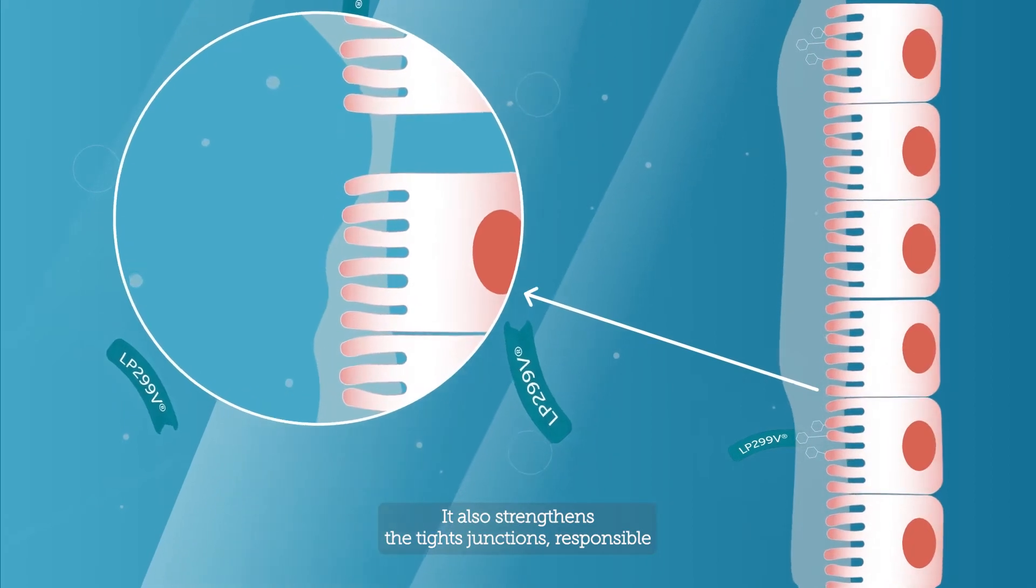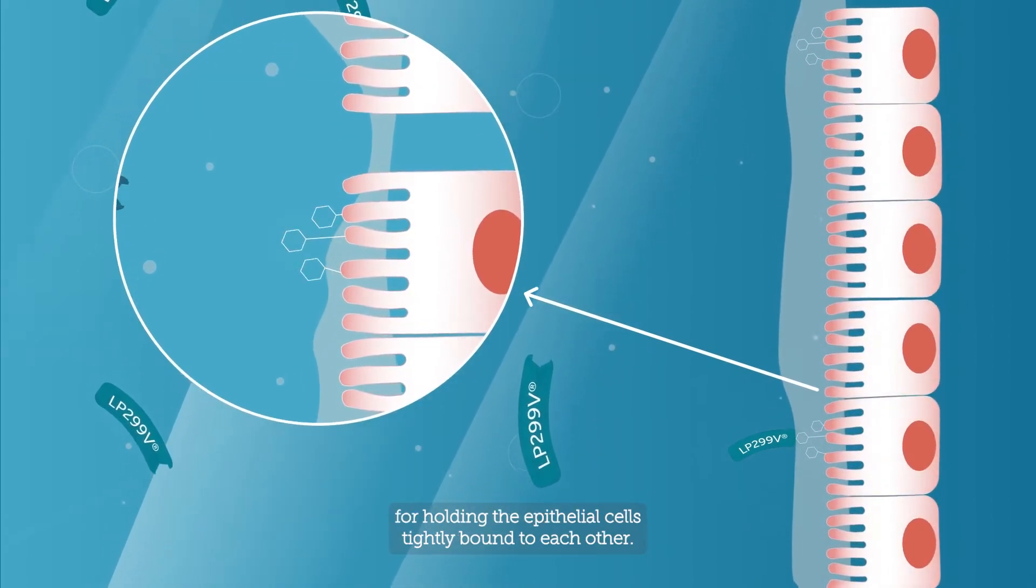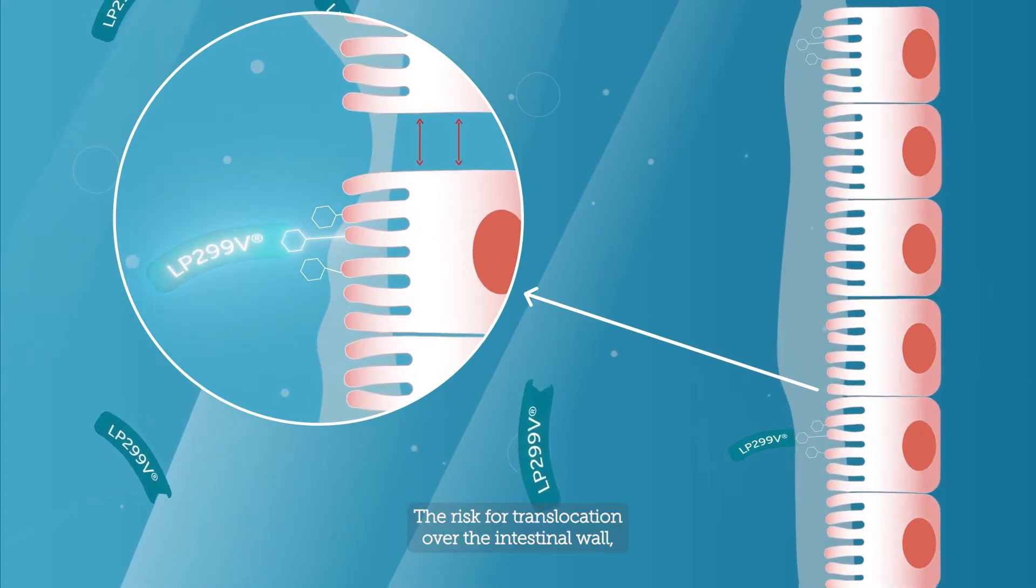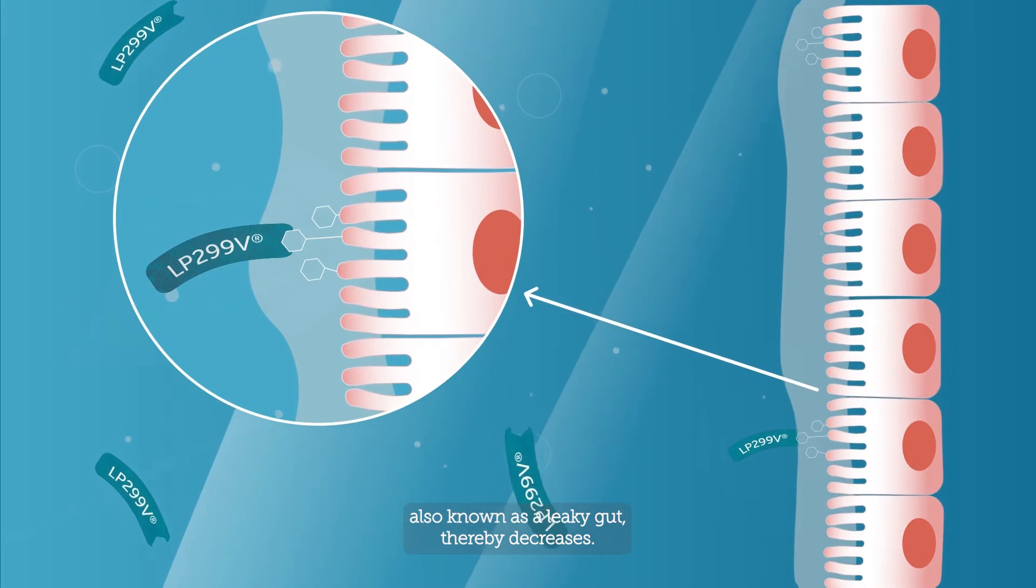It also strengthens the tight junctions, responsible for holding the epithelial cells tightly bound to each other. The risk for translocation over the intestinal wall, also known as a leaky gut, thereby decreases.